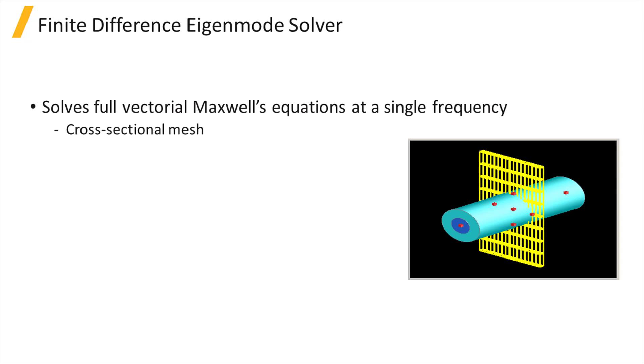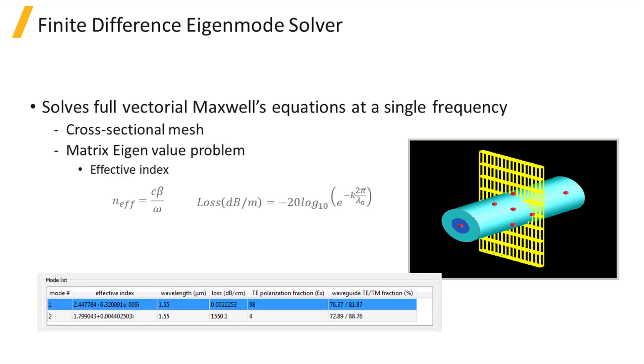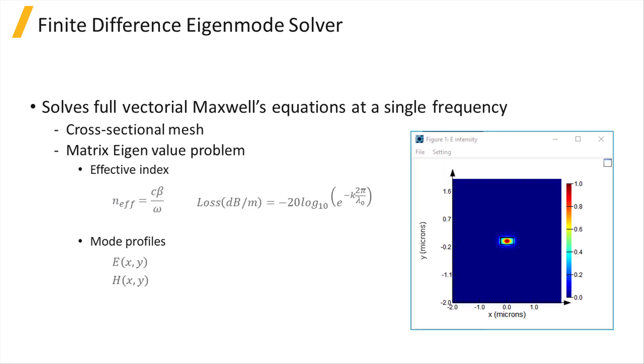The FDE solver uses a 2D rectangular mesh to discretize the cross-section of the waveguide. Maxwell's equations are then formulated into a matrix eigenvalue problem and solved using sparse matrix techniques to obtain the effective index and mode profiles of the waveguide modes.